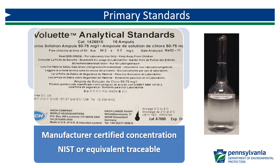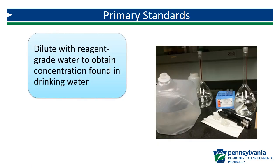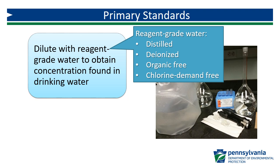Primary standards come prepackaged at a certified concentration indicated by the manufacturer. They must be produced in a manner that is traceable to the National Institute of Science and Technology (NIST). NIST traceability refers to a quality assurance program that certifies that a laboratory or manufacturer is equipped to calibrate to NIST standards and that any products match those NIST-maintained measurement standards. Prior to use, primary standards require dilution using reagent-grade water.